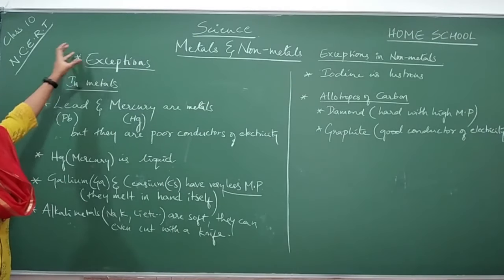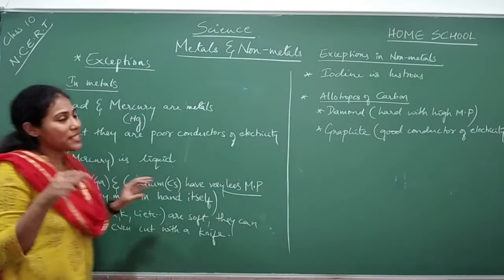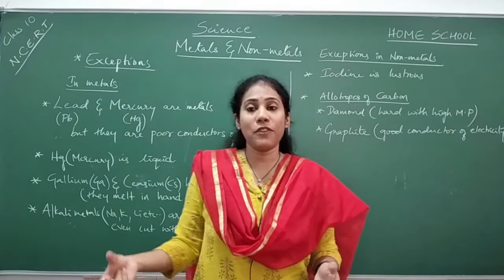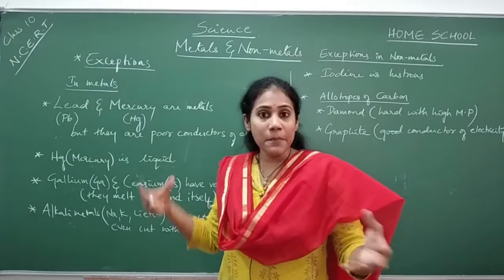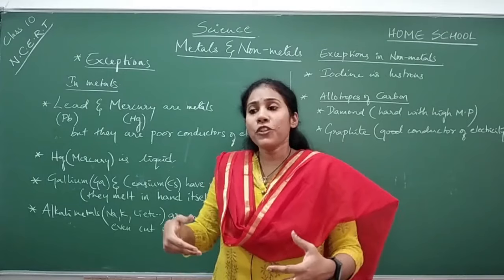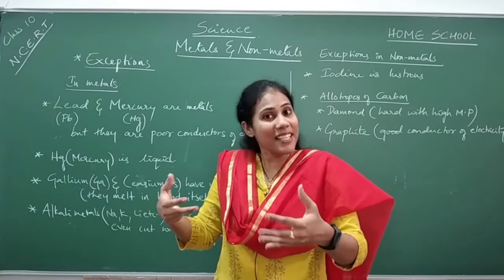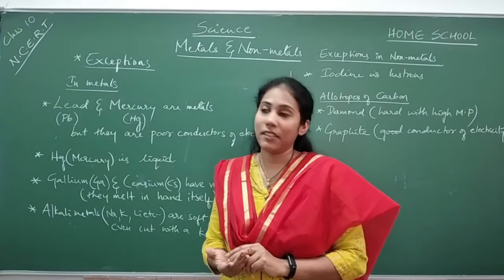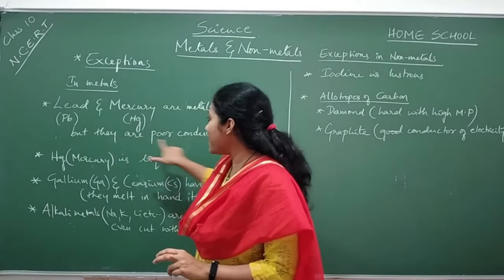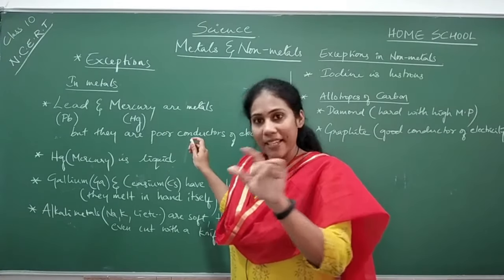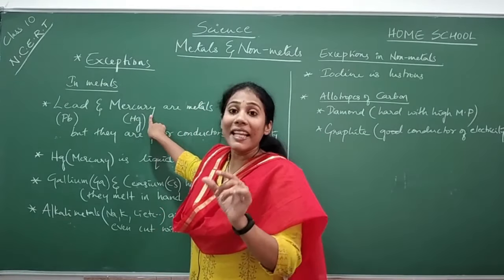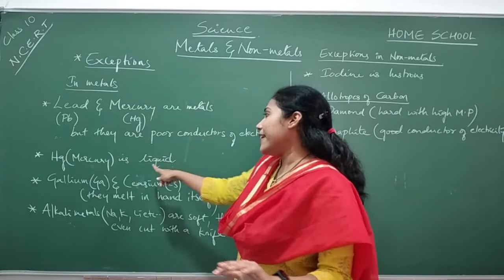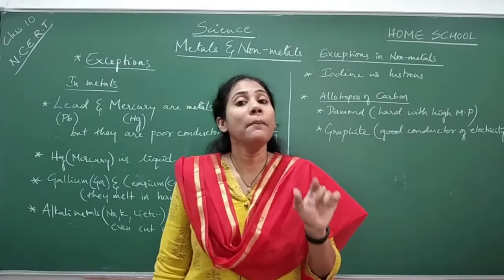Now let us discuss the exceptions in case of metals. We studied that all metals are hard, have high melting and boiling points, and are good conductors of electricity. But not every metal shows those properties. The first exception: lead and mercury are poor conductors of electricity — they do not conduct electricity well. The next exception: mercury is a liquid metal. I said all metals are solids, but mercury is the exception — it is the only metal which exists in a liquid state.